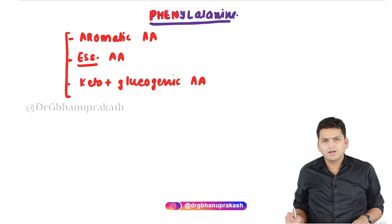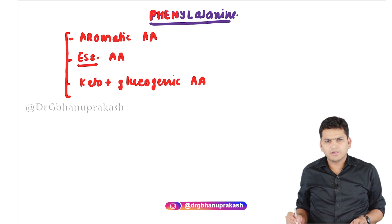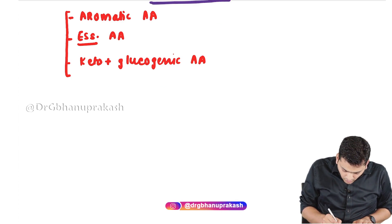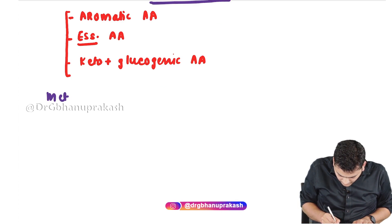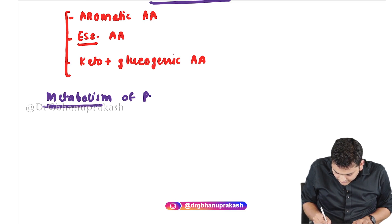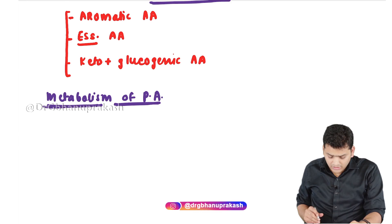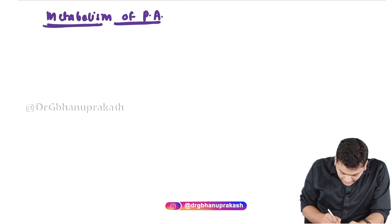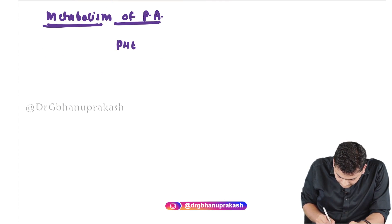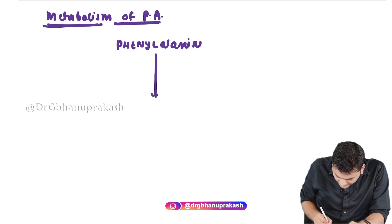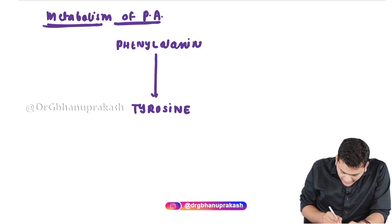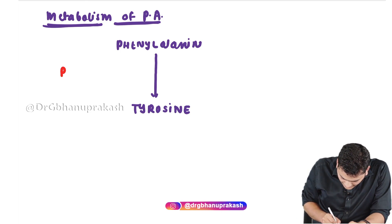When it comes to the metabolism of phenylalanine, we look at the normal metabolic pathway so we can understand how any error in it will manifest. Phenylalanine can convert into tyrosine, and the enzyme responsible for this conversion is phenylalanine hydroxylase.